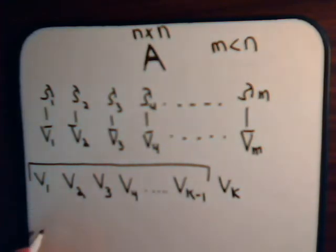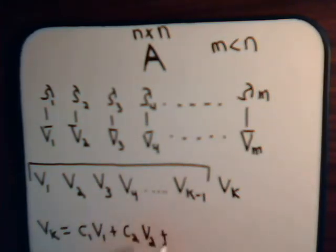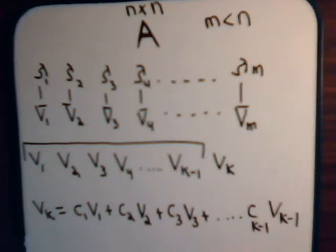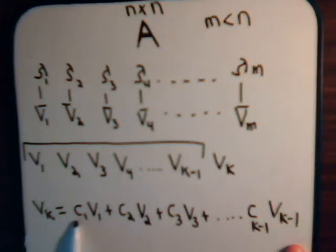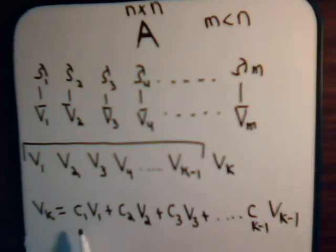So we would say that vector vk is some combination of these — vk equals c1 v1 plus c2 v2 plus c3 v3, and so on up to ck minus 1 times vk minus 1. It doesn't have to be a combination of all of them; some of these c's might be zero. We might have eight vectors and it's only a combination of maybe five of the eight. So some of these c's will be zero, others will be non-zero.